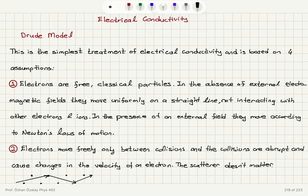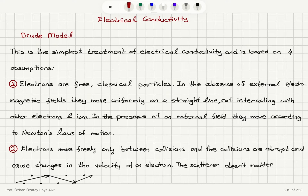We're going to use the Drude model to account for the electrical conductivity of metals. It's the simplest treatment of electrical conductivity, which is based on four assumptions.